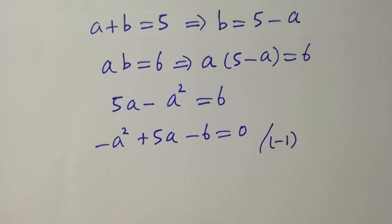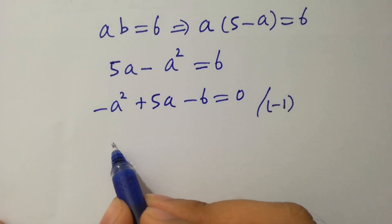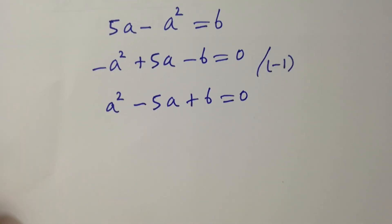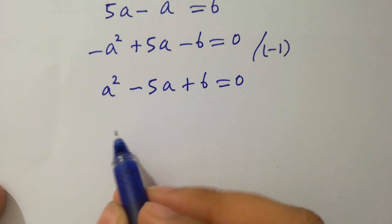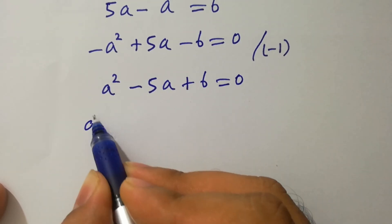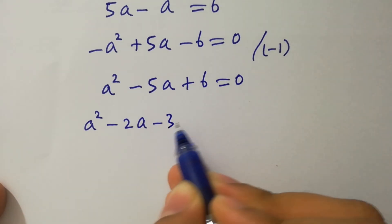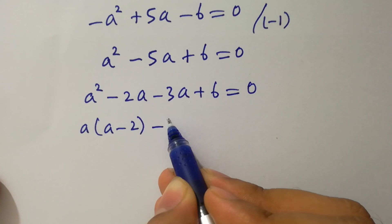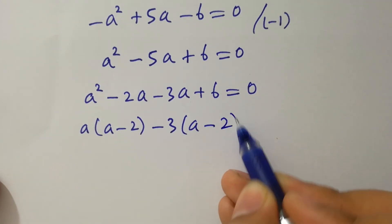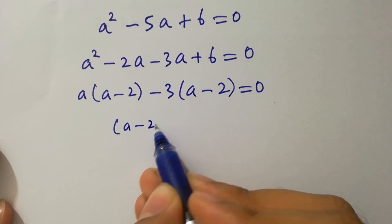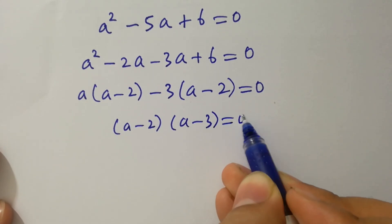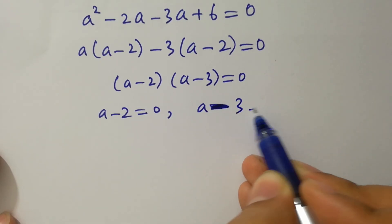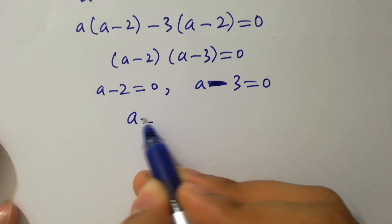Divide both sides by minus 1 to get a squared minus 5a plus 6 equals 0. Factorize: 3 times 2 equals 6 and 3 plus 2 equals 5, so we write a squared minus 2a minus 3a plus 6 equals 0, giving a times a minus 2, minus 3 times a minus 2 equals 0. Therefore a minus 2 equals 0 or a minus 3 equals 0, so a equals 2 or a equals 3.